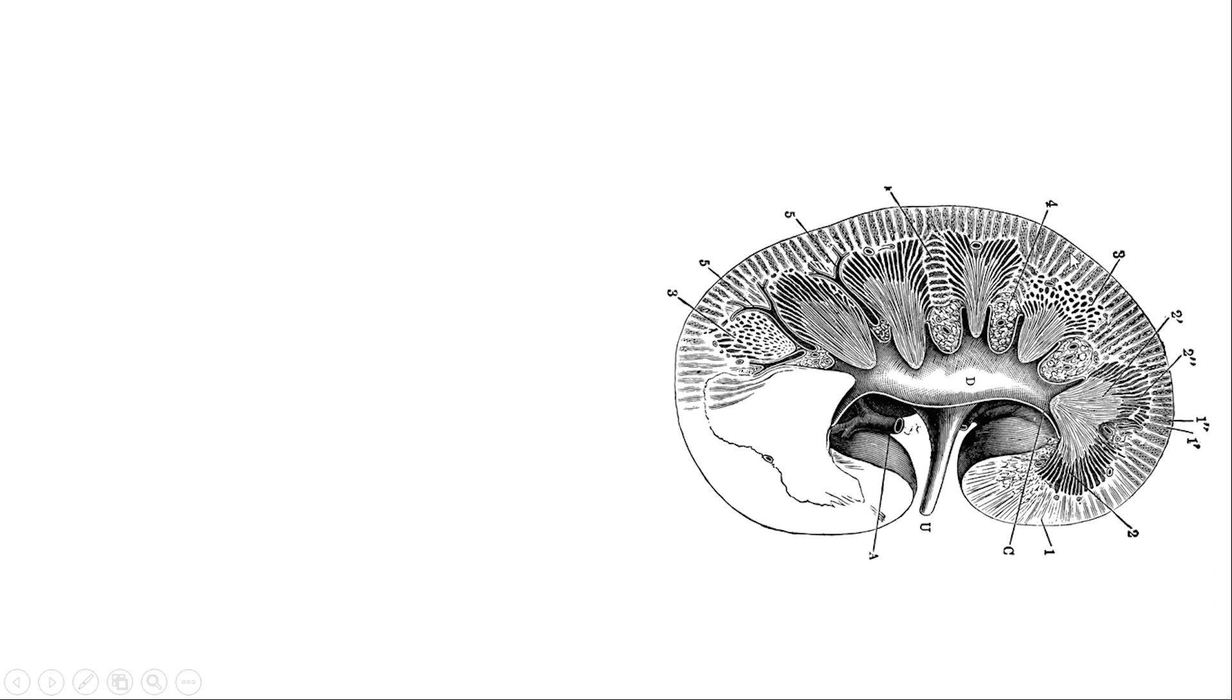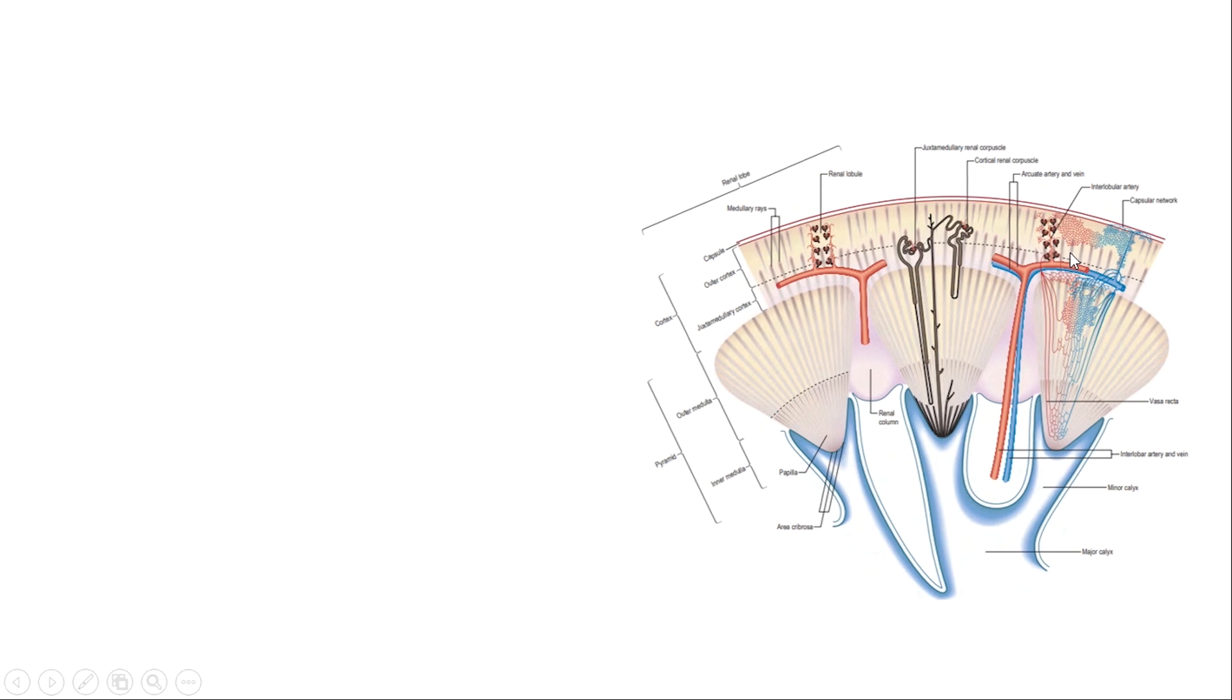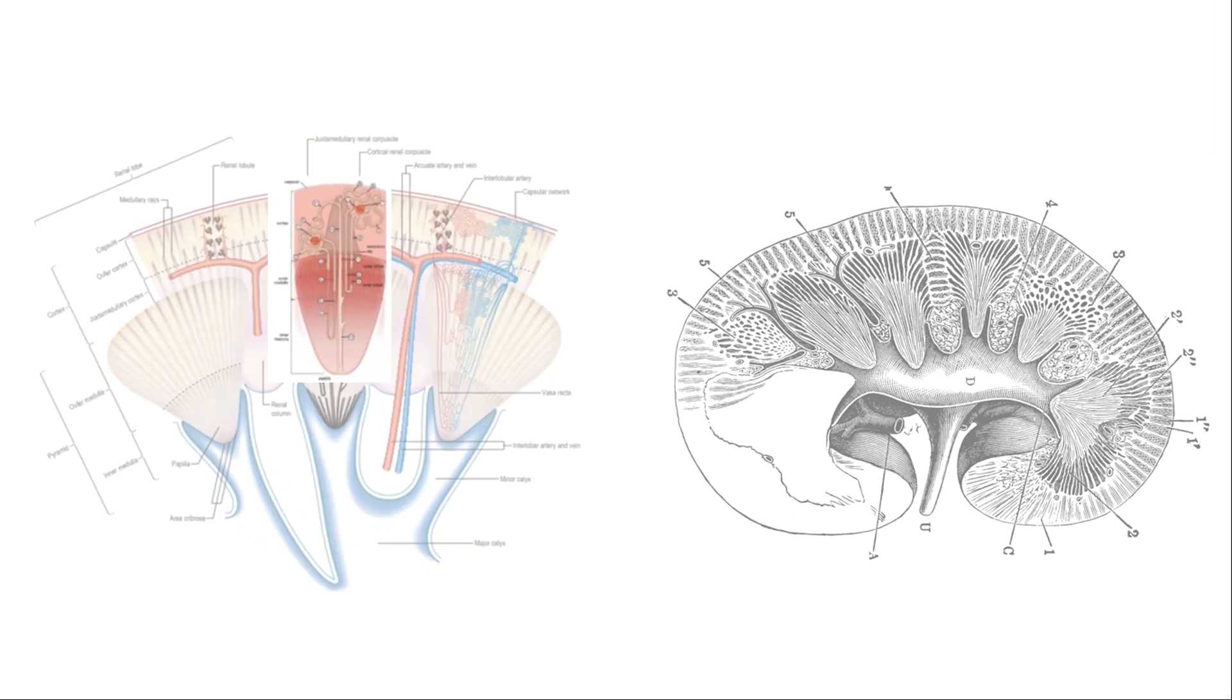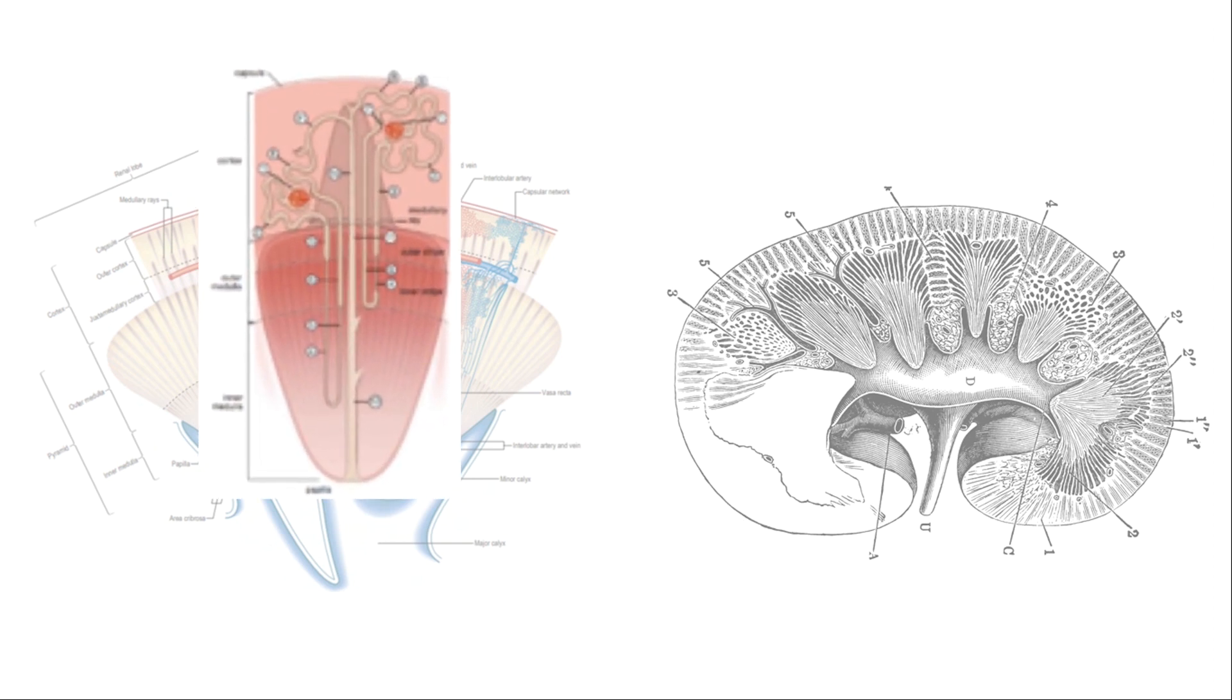Here are the medullary rays in the cortex. This is the renal pyramid. This is the cortical region. This is the nephron structure, the uriniferous tubule structure.